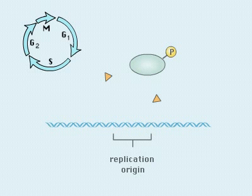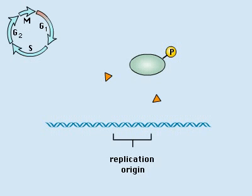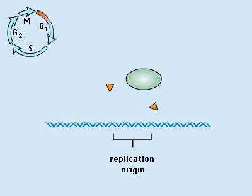In early G1, DNA pre-replication complexes are dephosphorylated and they assemble onto chromosome replication origins.